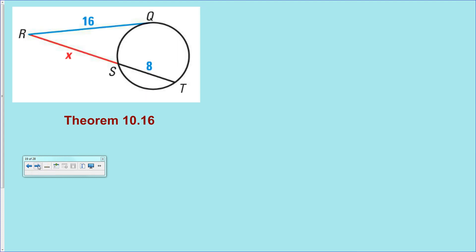Now, the big one. This is theorem 10.16. And this deals with a tangent line and a secant line intersecting outside of a circle. And that theorem said take the tangent line, square it, and set it equal to the external segment times the entire length.